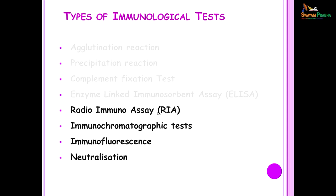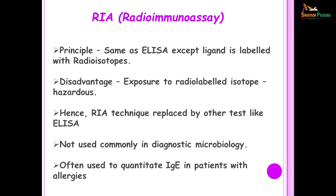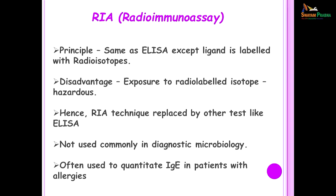Another type of test is the radioimmunoassay. The radioimmunoassay is just like the ELISA except the ligand is labeled with radioisotopes, and you need a Geiger counter to count the number of radioisotopes present in the sample. This is a hazardous test and has been replaced by tests like the ELISA where you do not need complicated equipment. It is not commonly used in the diagnostic microbiology lab, but is often used for quantitation of IgE in patients who suffer from allergies, because IgE cannot be quantitated by a test like radial immunodiffusion.